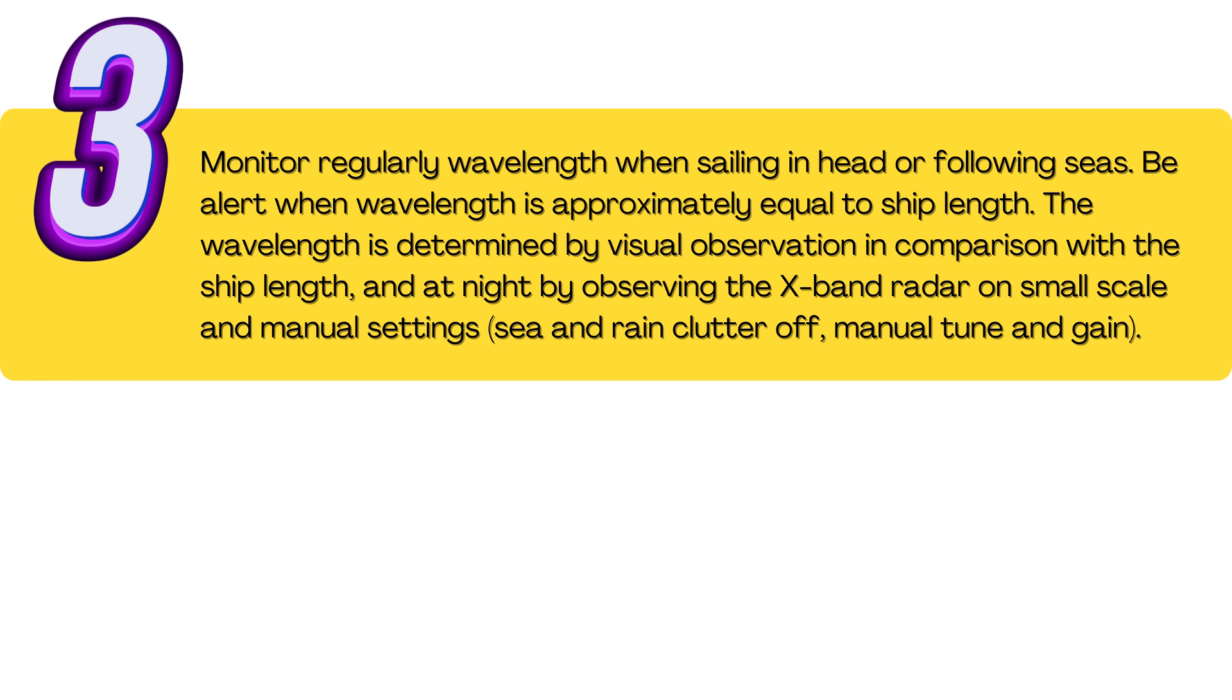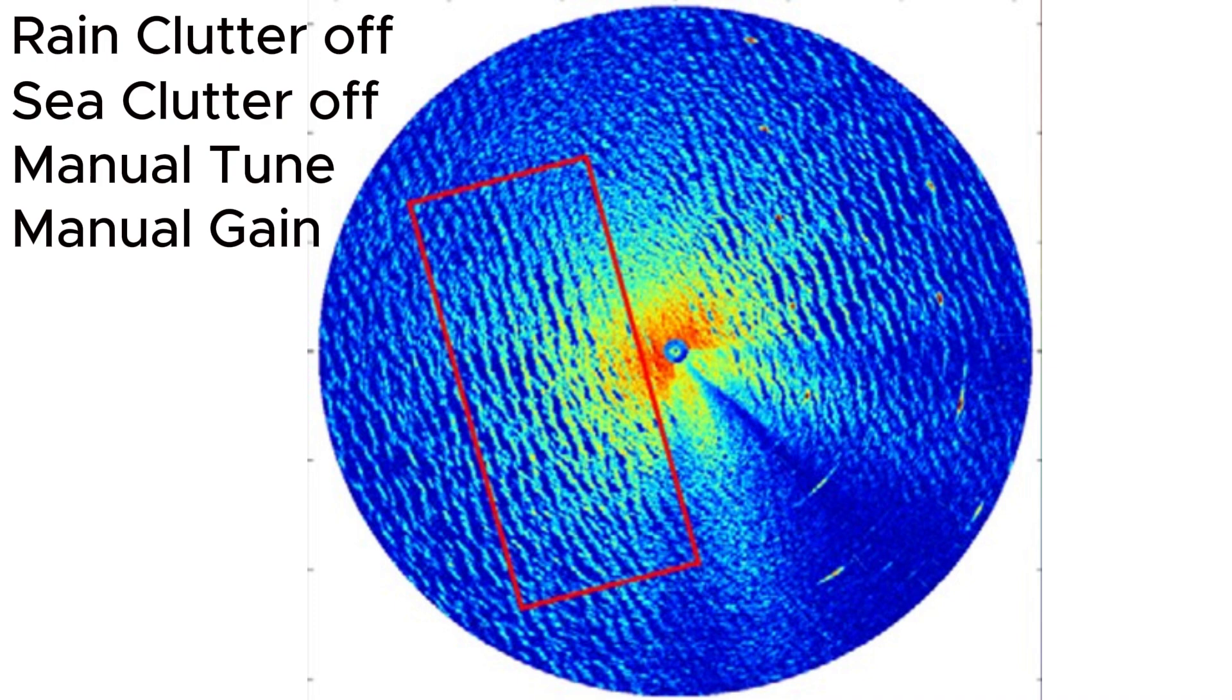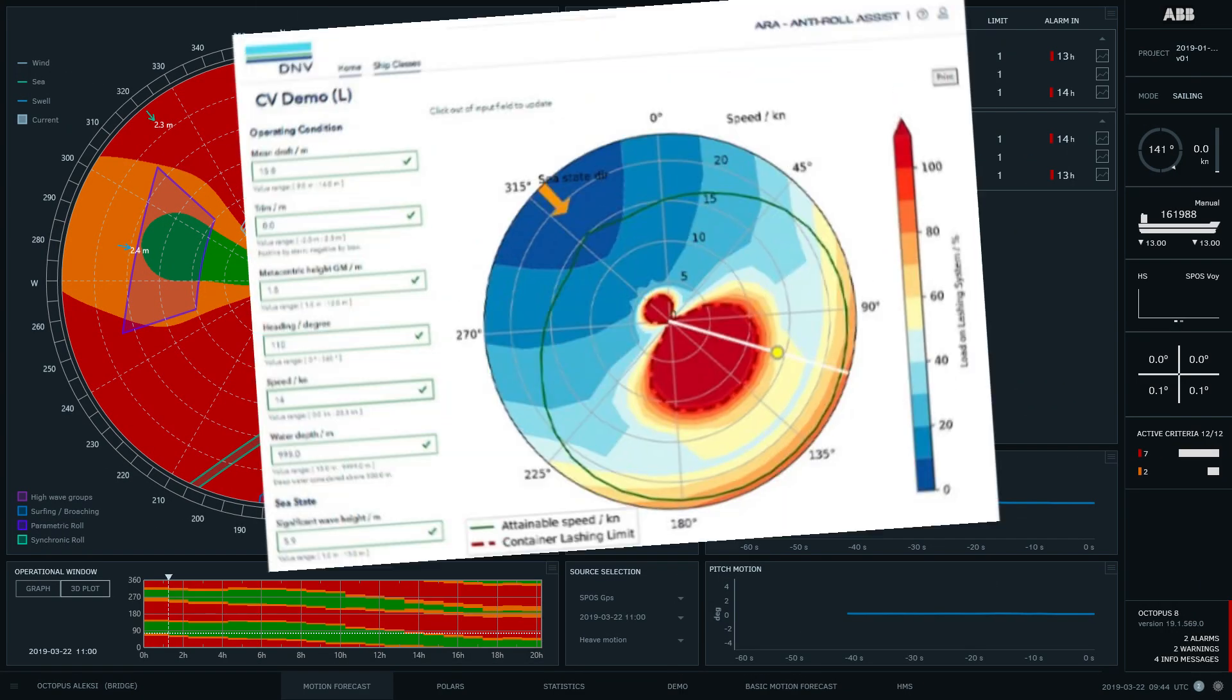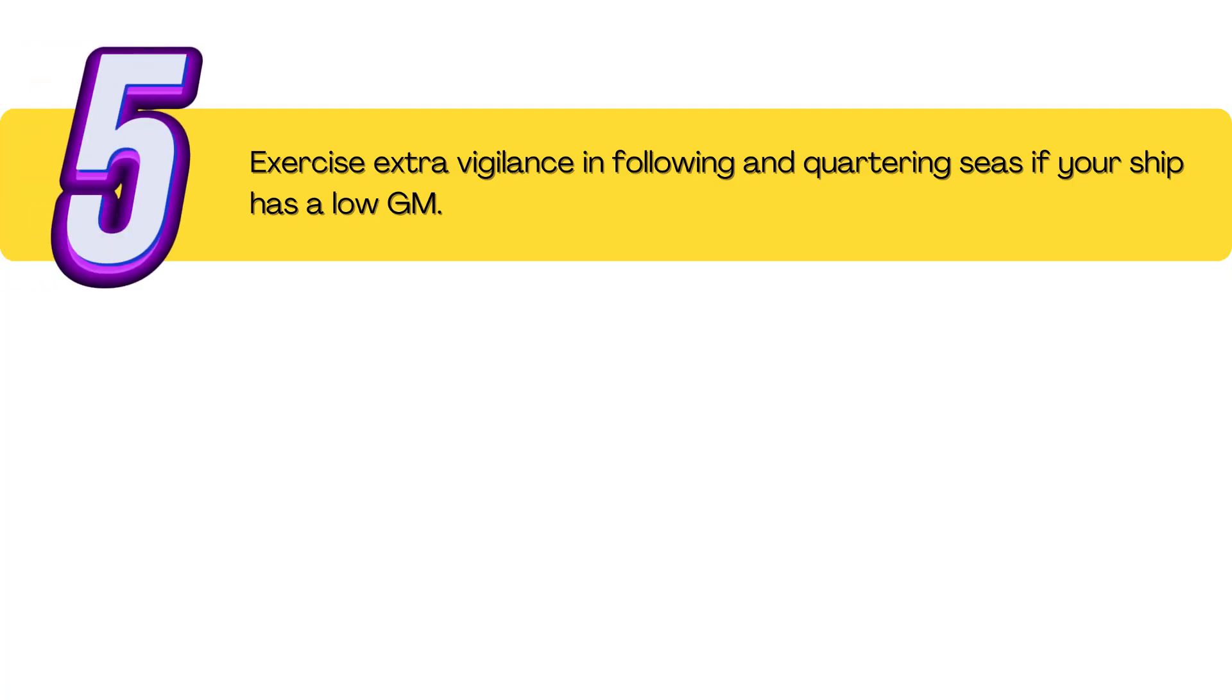Three, monitor regularly wavelength when sailing in head or following seas. Be alert when wavelength is approximately equal to ship length. The wavelength is determined by visual observation in comparison with the ship length and at night by observing the X-band radar on small-scale and manual settings. Four, utilize decision support software designed to predict parametric rolling. Five, exercise extra vigilance in following and quartering seas if your ship has a low GM.